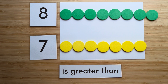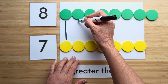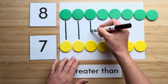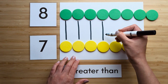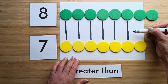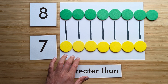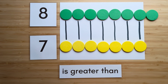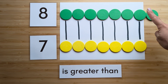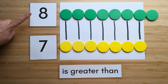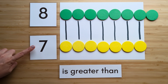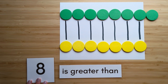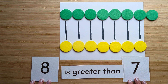Now let's compare. Match them up. Which one has extra? Eight has extra. Eight is greater than seven. Nice job. Clear off your boards to try the next one.